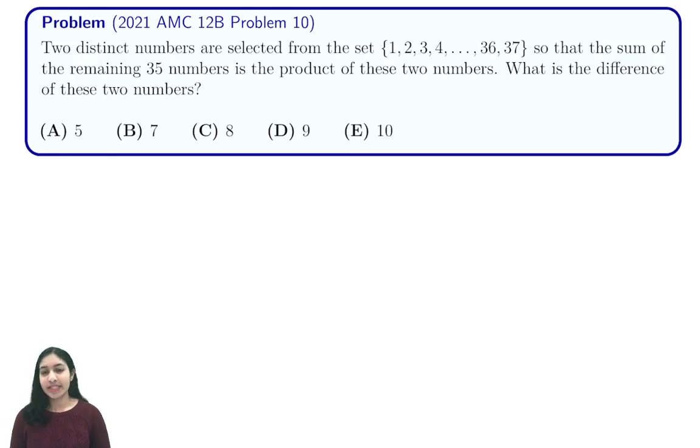Hi everyone! In this video we're going to be discussing 2021 AMC 12B problem 10. It states that two distinct numbers are selected from the set 1 through 37.